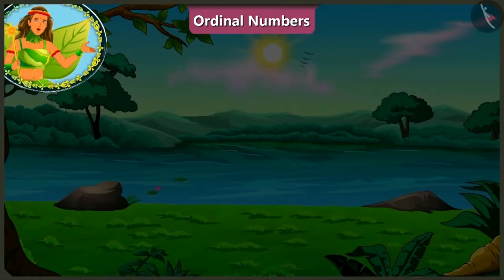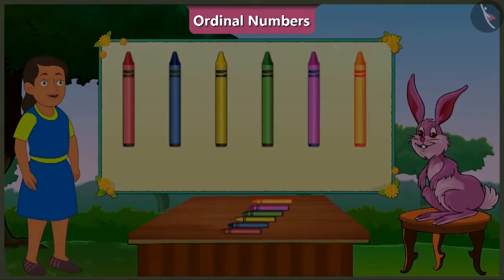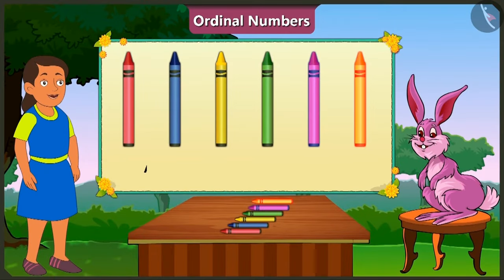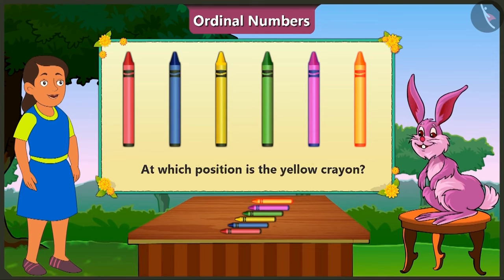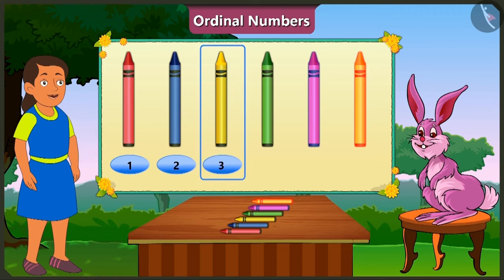Children, today we will look at examples based on ordinal numbers. Bubbly, can you tell me the position of the yellow crayon? Look Bunny, 1, 2, 3. The yellow crayon is at the third place.